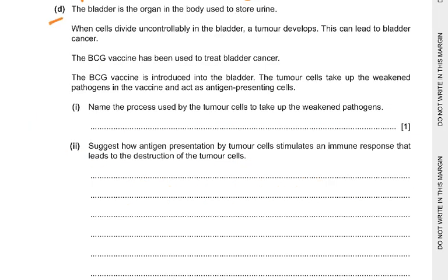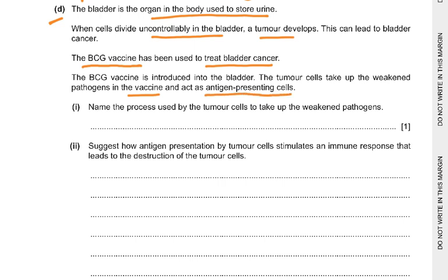Part D: The bladder stores urine. When cells divide uncontrollably in the bladder, a tumour develops, leading to bladder cancer. The BCG vaccine has been used to treat bladder cancer: it is introduced into the bladder, tumour cells take up the weakened pathogens and act as antigen-presenting cells. Name the process by which tumour cells take up the weakened pathogen: endocytosis, or phagocytosis — both are accepted.